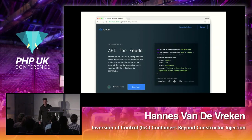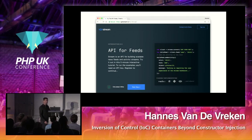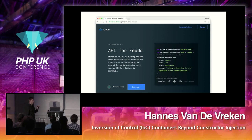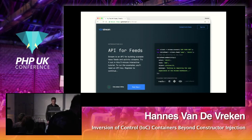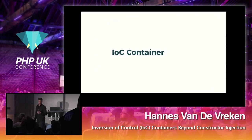We have a page called GetStream.io/TryTheAPI. It's super easy. You can sign up with GitHub — it's totally free — and you can browse through our API and see how it works. But that's not what you came for. You came for the IOC container.